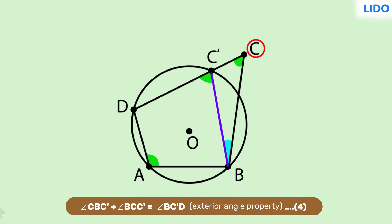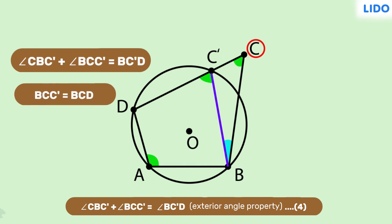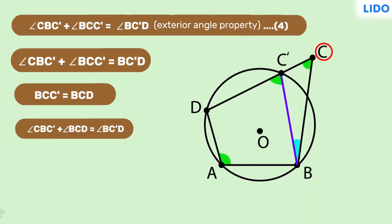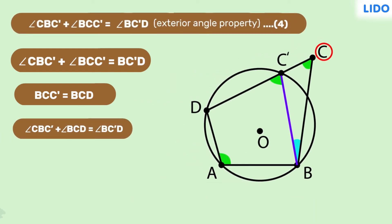Therefore, equation 4 can be written as angle CBC' plus angle BCD is equal to angle BC'D. But angle BC'D is equal to angle C by equation 3. So by substituting this, we can say that angle CBC' plus angle BCD is equal to angle BCD.